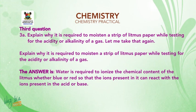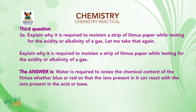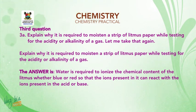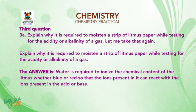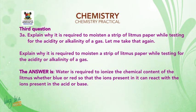Third question: explain why it is required to moisten a strip of litmus paper while testing for the acidity or alkalinity of a gas. The answer is: water is required to ionize the chemical content of the litmus — whether blue or red — so that the ions present in it can react with the ions present in the acid or base.